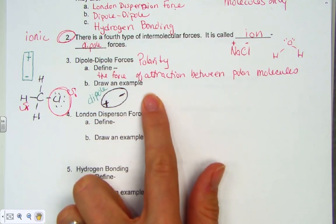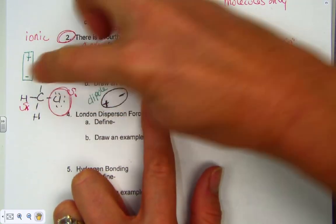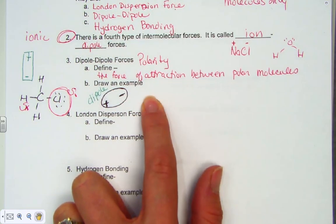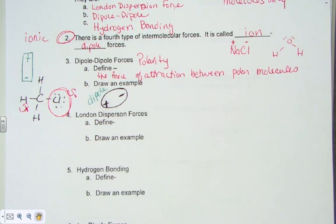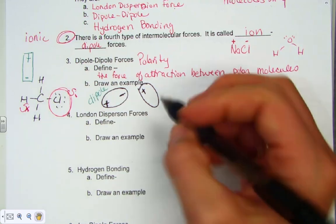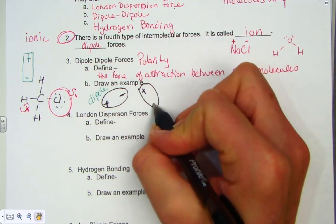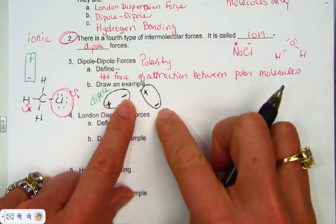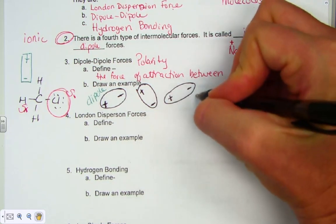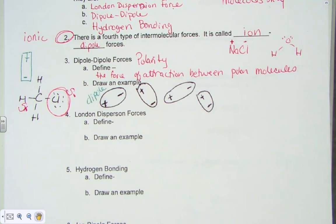Opposites attract — the positive end, the hydrogens, aligns closer to the negative end, and the negative end of the second molecule is repelled away. I keep drawing molecules, twisting them so opposite charges come close together and like charges stay far away.